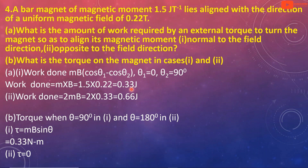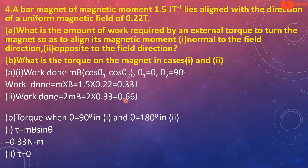In the second case, we align the magnet in the opposite direction to the field. Using the same equation with theta going from 0 to 180 degrees, work done equals m B (cos 0 minus cos 180) equals 2mB. That is 2 into 0.33, which equals 0.66 joule.